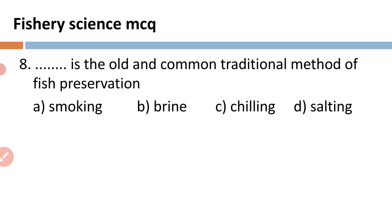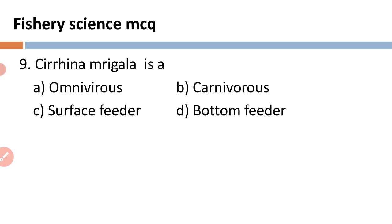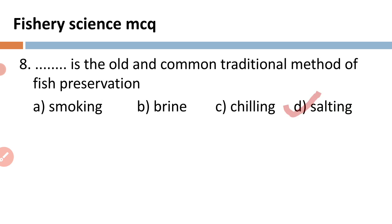Next question: blank is the old and common traditional method of fish preservation. There are different fish preservation techniques. Out of the four given options, we have to choose which is the traditional and common method used by Indian fishermen — A) smoking, B) brining, C) chilling, and D) salting. Salting is the common method used or followed by our fishermen. So the correct option is that salting is the old, common, and traditional method of fish preservation.